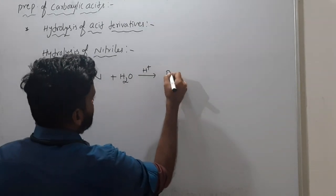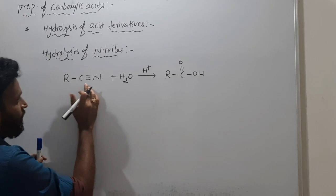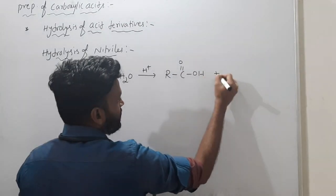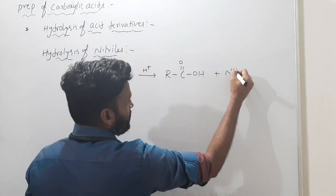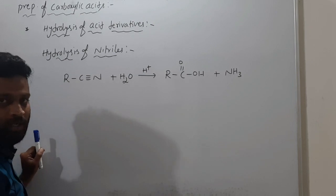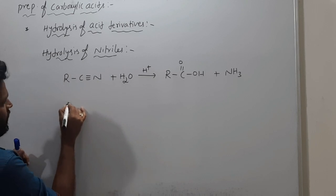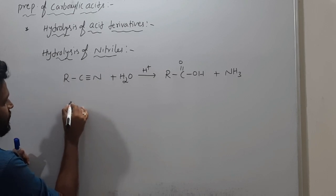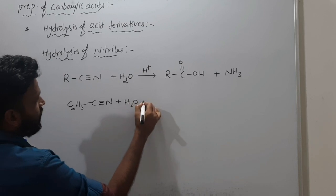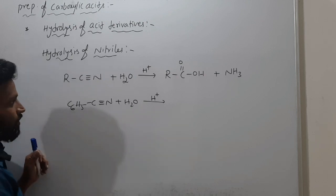This is HCN with water in hydrolysis and H+. What happens: R-C≡N with water and H+ gives R-COOH. This completely breaks the C≡N triple bond; R-COOH forms and nitrogen comes out as NH4+. NH4+ is nothing but NH3 and H+.